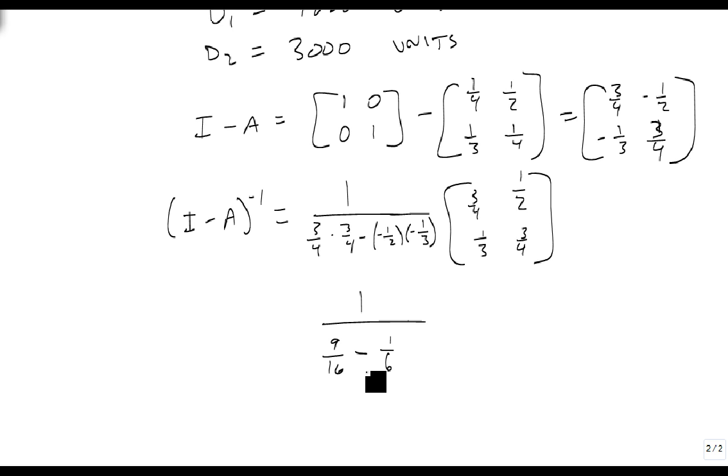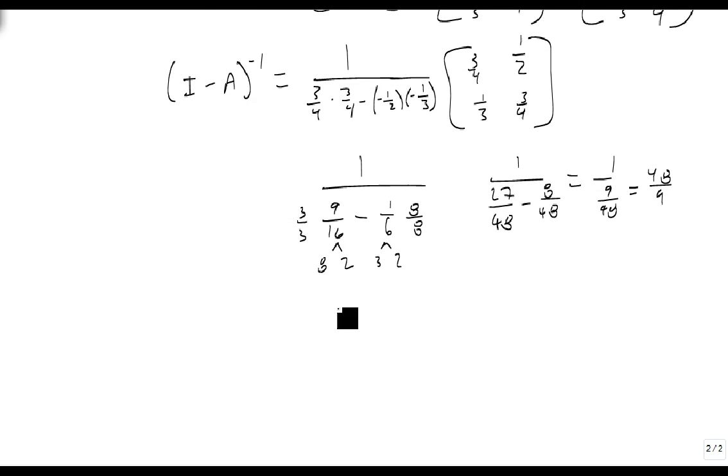Both of these go into, let's see, 16 is 8 and 2, and this is 3 and 2. So they both go into 48, so this is missing a 3, and this is missing an 8. So 3 times 9 is 27, over 48, minus 8 over 48, which is 19 over 48, which is 48 ninths. So that means that my inverse is 48 ninths times 3/4, 1/2, 1/3, 3/4.